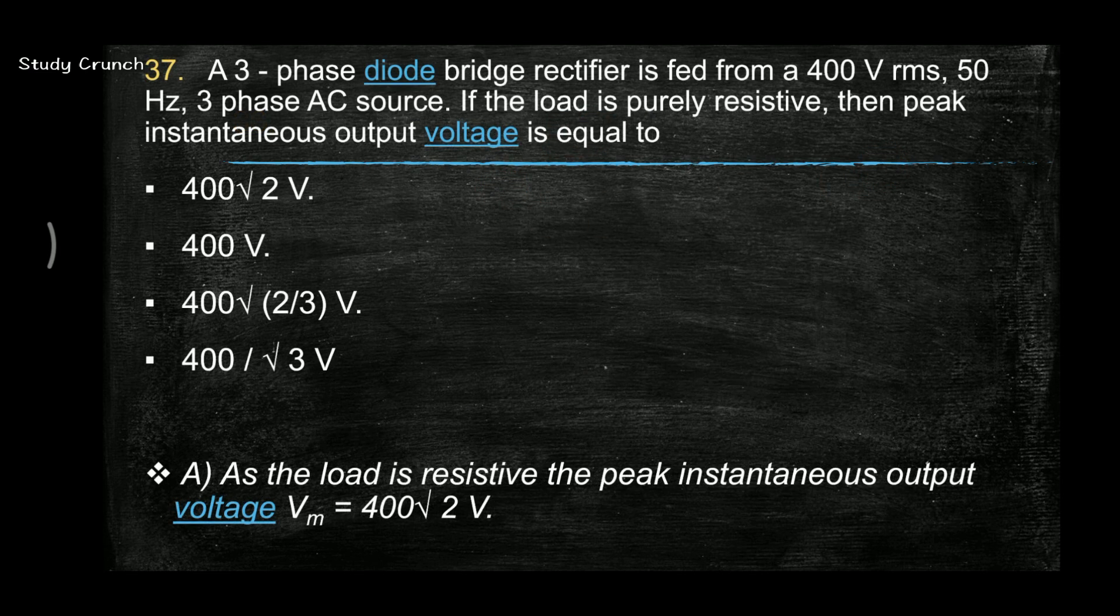Next, a 3-phase diode bridge rectifier is fed from a 400V RMS, 50Hz, 3-phase AC source. If the load is purely resistive, then the peak instantaneous output voltage is equal to what? The answer will be 400 root 2 volts.